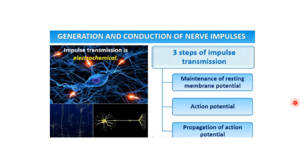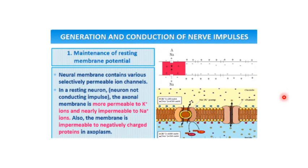Now that we have understood the structure of the neuron, let us understand how the brain transmits messages. The brain transmits messages in the form of nerve impulses. The impulse transmission is electrochemical and has three steps: first, maintenance of the resting membrane potential; then action potential; and then the propagation of this action potential. The neural membrane contains various selectively permeable ion channels. In a resting neuron — meaning the neuron is not currently conducting any impulse — the axonal membrane is more permeable to potassium ions and impermeable to sodium ions.